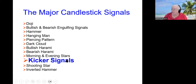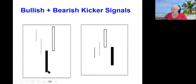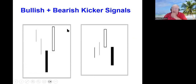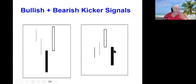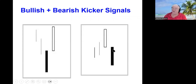The kicker signal is one of your strongest individual candlestick signals. It tells you: if you're in a downtrend and it opens here and closes here, and they gap it up the next day at or above the previous day's open and go positive, they've kicked investor sentiment in the opposite direction. Same scenario — if you're in an uptrend and they gap it down below the previous day's open and go the opposite direction, that's a very strong sell signal. And if you're long and you see them gapping it down, you get out of the trade immediately.